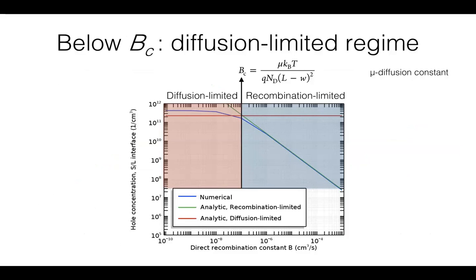What happens when this recombination is similar to the reaction rate is that we derived that the model switches from the recombination limited regime, which is here above B greater than BC, this direct recombination critical rate.